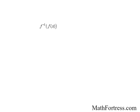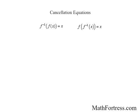Recall that if we start with x, apply f of x, and then apply the inverse of f of x, we arrive back at x. Likewise, if we start with x, apply f inverse of x, and then apply f of x, we arrive back at x. In essence, the composition of a function and its inverse undo each other, leaving you with the independent variable x. These two equations are called the cancellation equations.